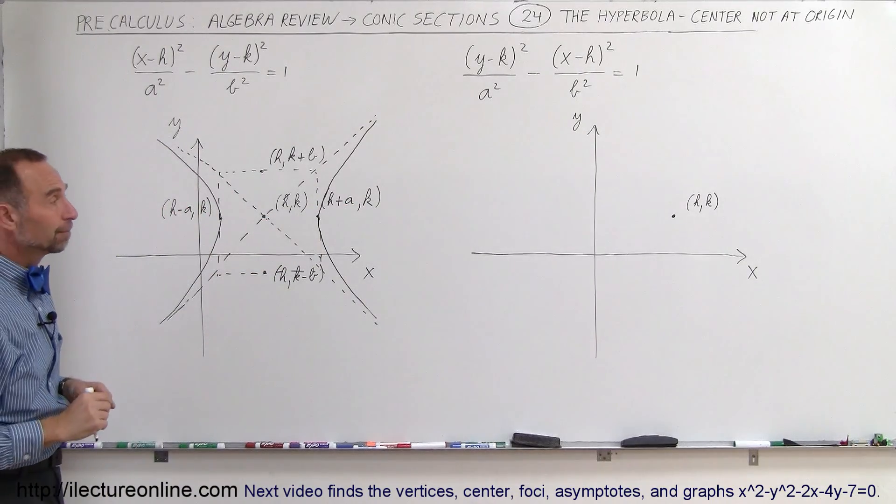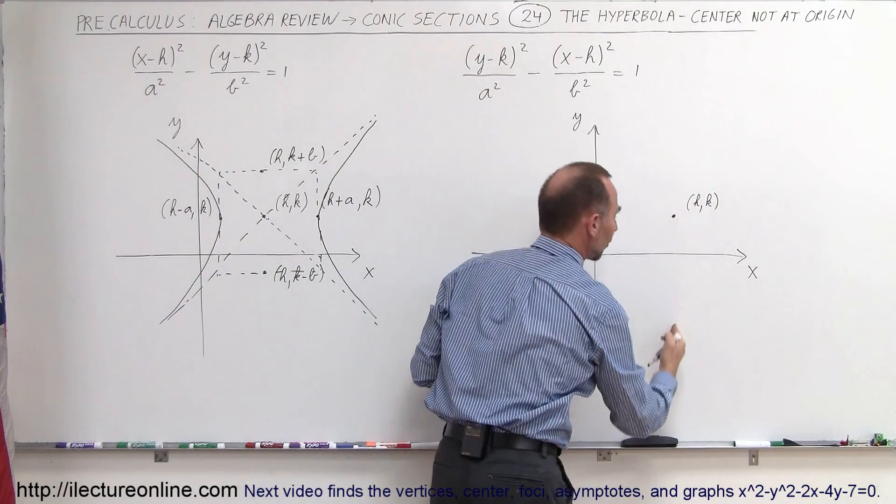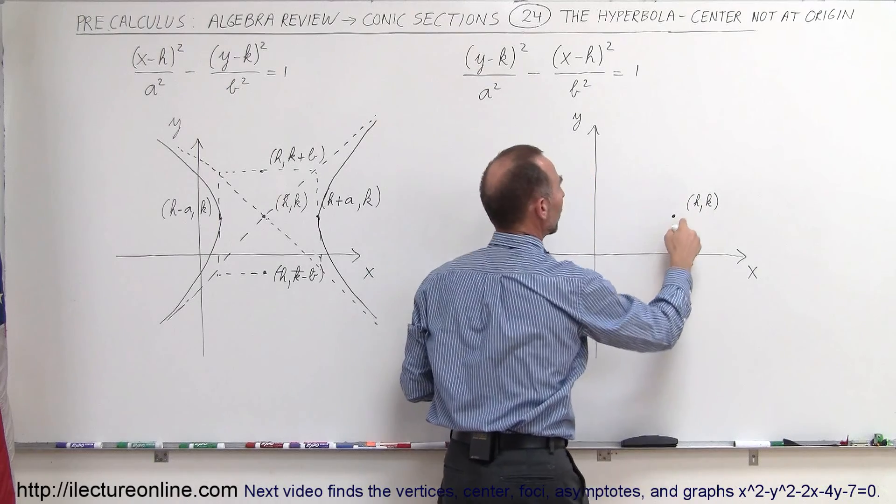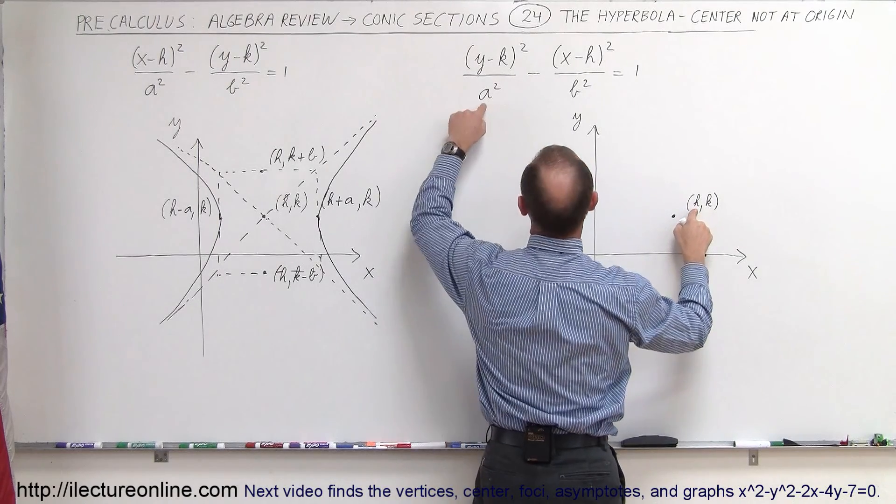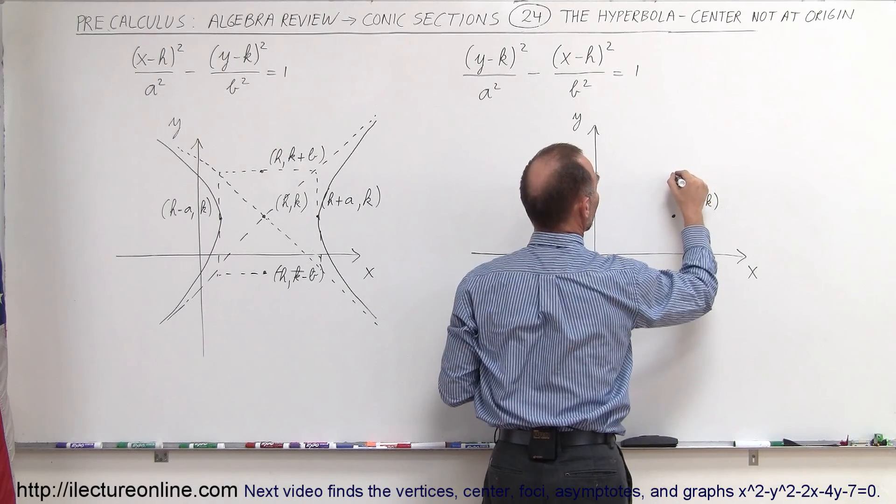All right. Now let's do the vertical type. Okay, again, we're going to need the box. We need to find the points. Remember, the vertices are going to be on the vertical axis right here, so we're going to be on h plus a. a is associated with the vertex and with the y-axis in this case, so we pick a point right there.